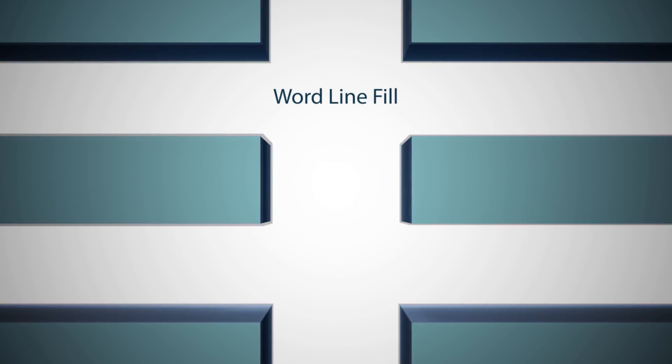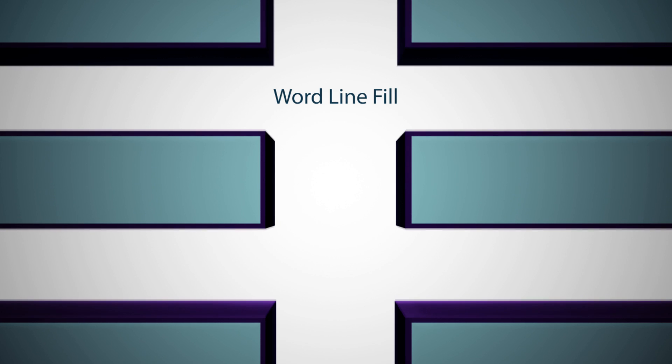In some 3D NAND schemes, the nitride layers are removed and tungsten word lines are then created with an inside-out atomic layer deposition process.